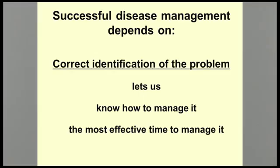To successfully manage plant diseases, or any pest for that matter, we need to first correctly identify the cause of the problem. Once we know if a pathogen or insect is causing the problem, we can determine the best management techniques and the most effective time to use them. We can also determine if the problem might be caused by an environmental or non-living factor, and then we wouldn't even have to use any kind of pesticides at all.